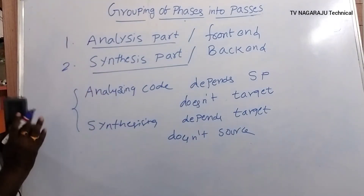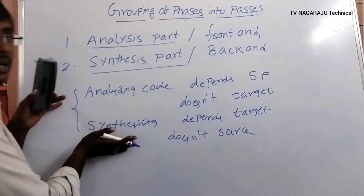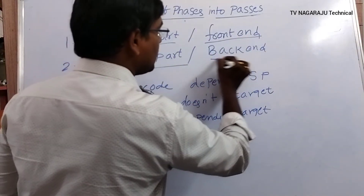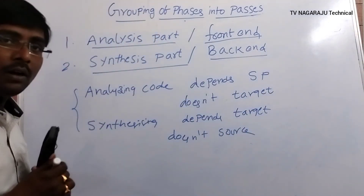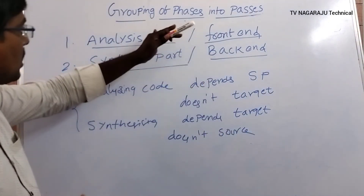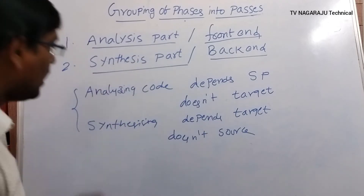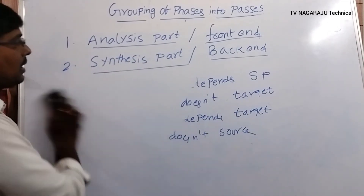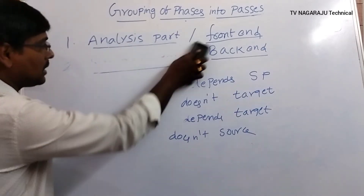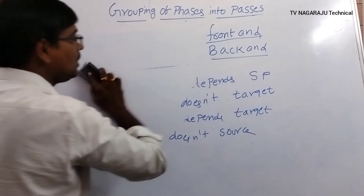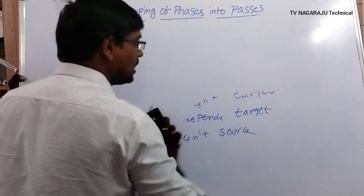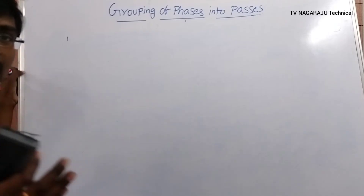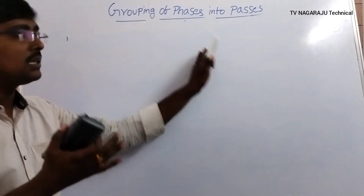Both parts are completely reverse of each other. Among the six phases, the first three phases come under the analysis part, and the remaining three phases come under the synthesis part — though originally that is not exactly correct.